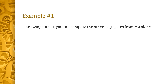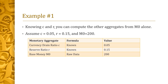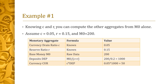To illustrate these equations, we work through two examples. In the first, the currency drain ratio C and the reserve ratio R are known, so base money alone suffices to calculate the other four aggregates. Assume C is 5%, R is 15%, and base money M0 is 200. We first compute deposits DEP: it equals M0 divided by (C plus R), which is 200 divided by 0.2, giving 1,000. Next, currency CUR equals C times DEP, which is 0.05 times 1,000, giving 50.